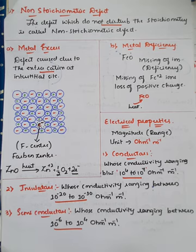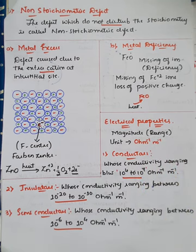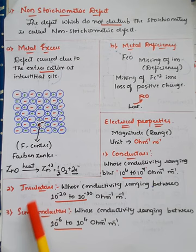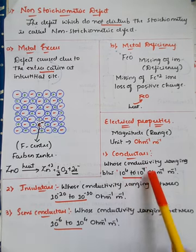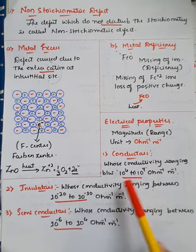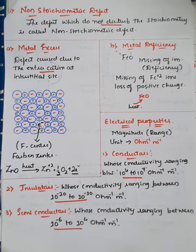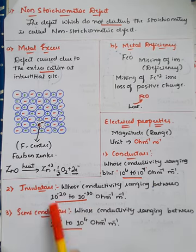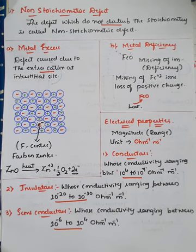In electrical properties of solids, one important type of measurement is based on the magnitude or range, explained with the unit per ohm per meter. Based on magnitude or range we classify electrical properties into three types: conductors, insulators, and semiconductors. In conductors, the range is 10⁴ to 10⁷ per ohm per meter. In insulators, conductivity ranges between 10⁻²⁰ to 10⁻¹⁰ per ohm per meter. If conductivity is in between — that is 10⁻⁶ to 10⁴ per ohm per meter — it is classified as a semiconductor.